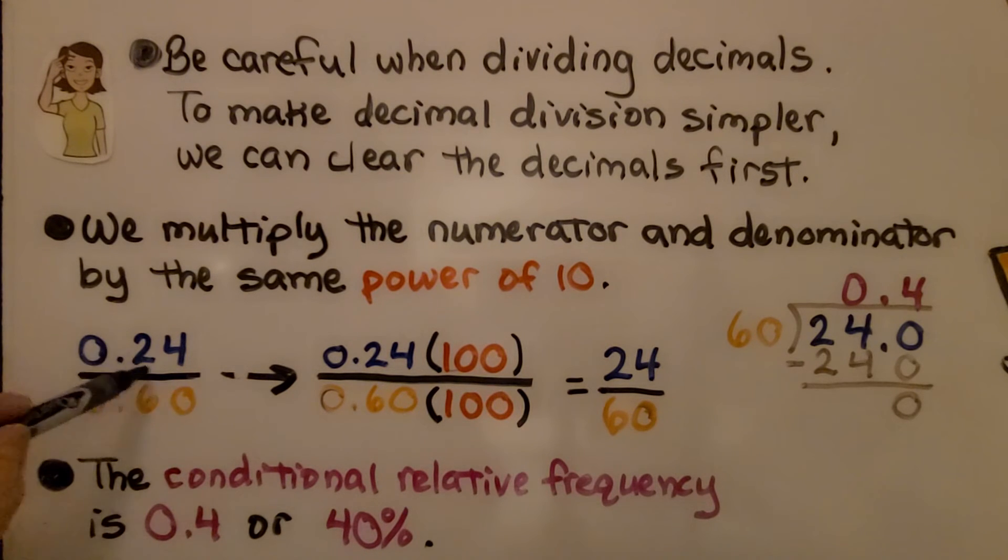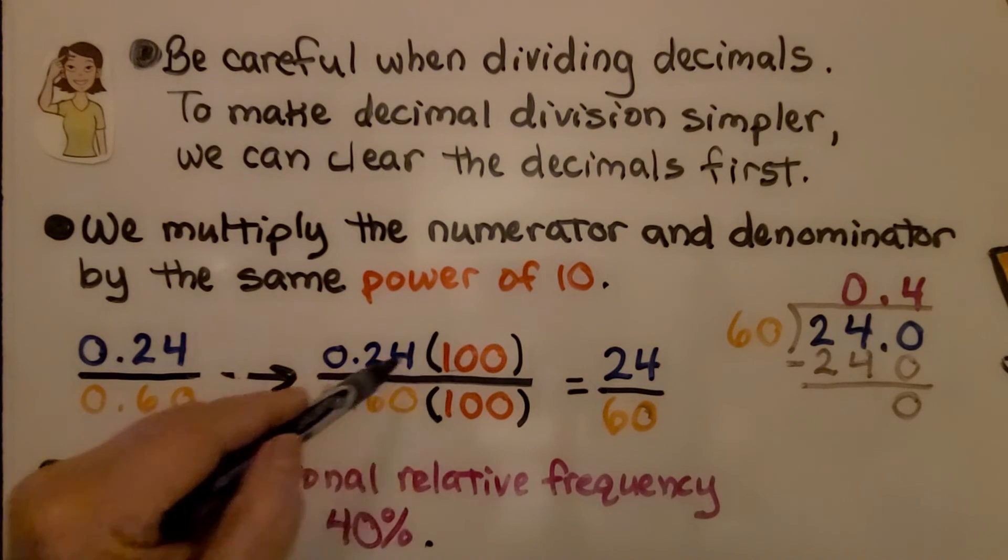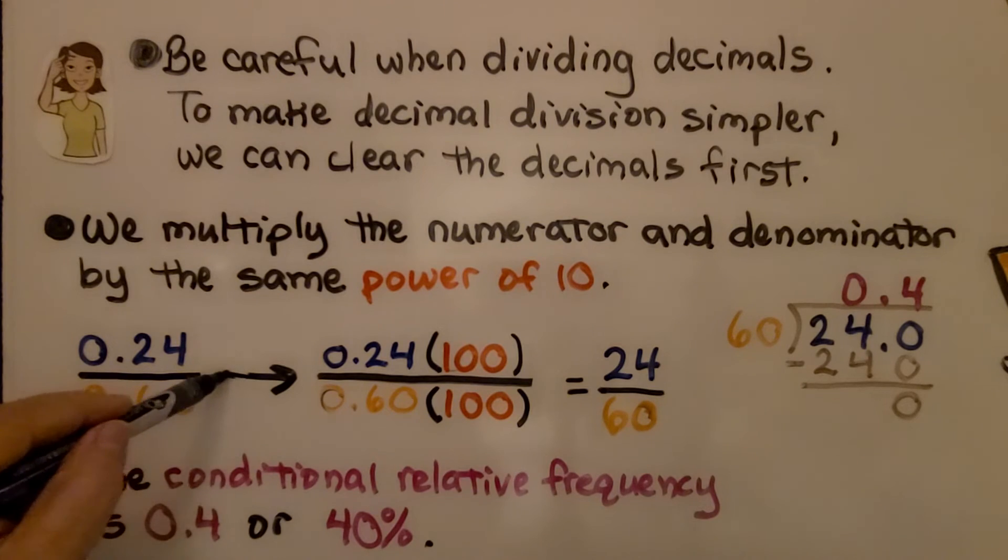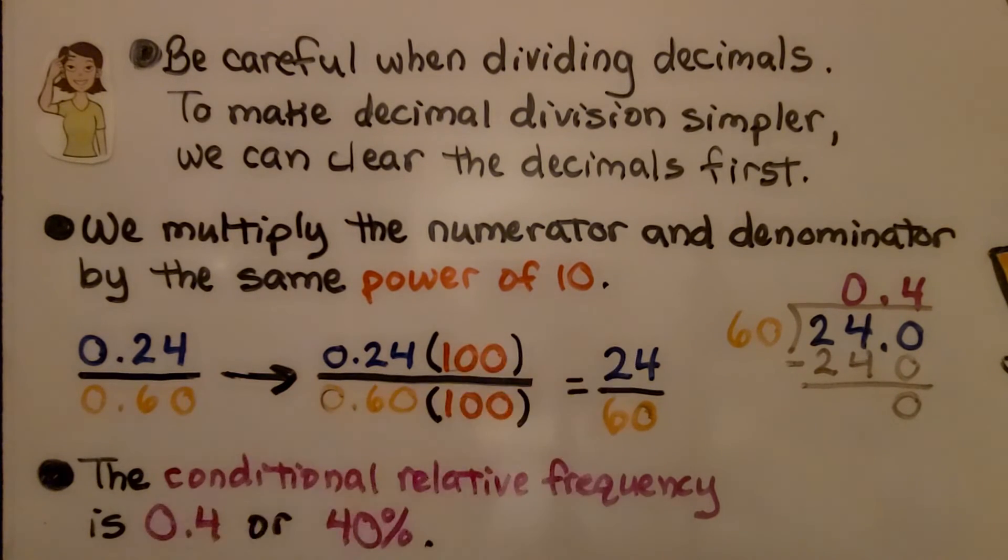But, since we've got two place values here as 24 hundredths, we need to multiply it by 100 to get rid of that decimal. So, that means 0.24 times 100 would bring us to a 24, which is a lot easier to divide.